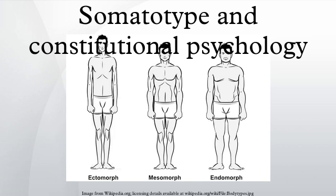Somatotype is a taxonomy developed in the 1940s by American psychologist William Herbert Sheldon to categorize the human physique according to the relative contribution of three fundamental elements, somatotypes, named after the three germ layers of embryonic development: the endoderm, the mesoderm, and the ectoderm.